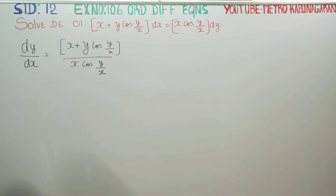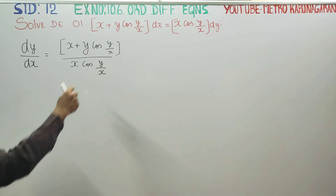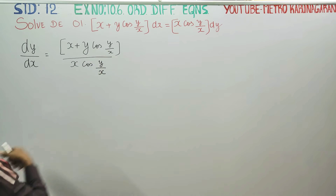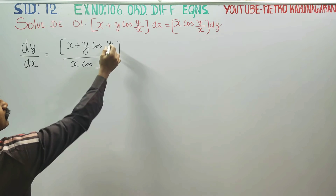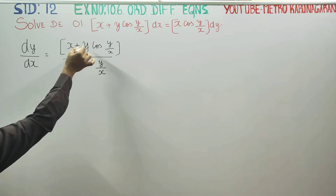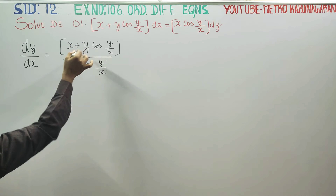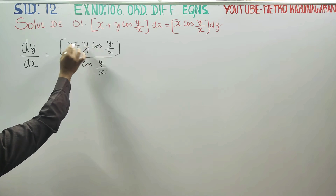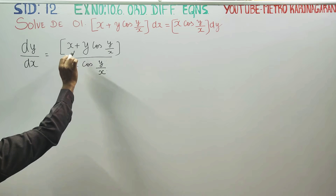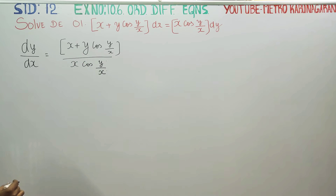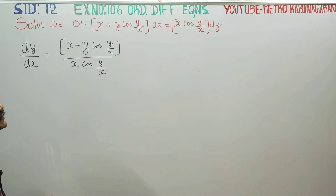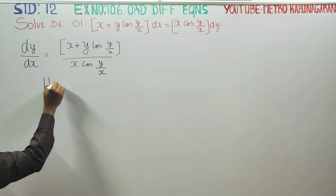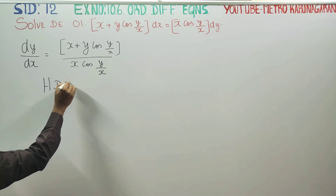This is not variable separable. If you look at y and x, the degree of each term: power 1, power 1. If you look at the degree, xy, xy is equal to 1. x is equal to 1, y is equal to 1. xy is equal to 1. It is called a Homogeneous Equation — a Homogeneous Differential Equation.